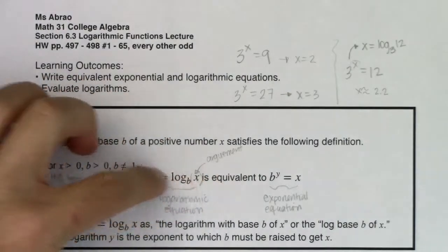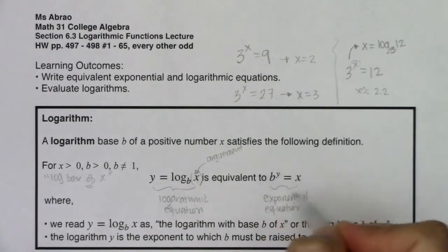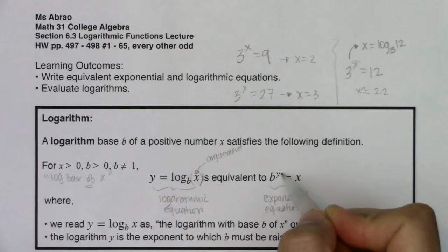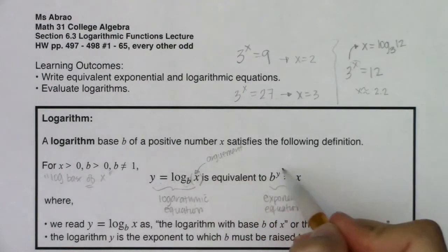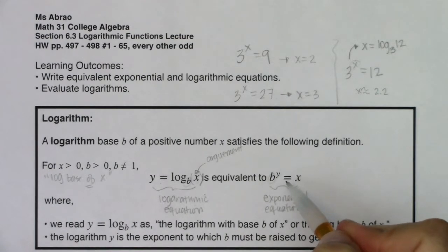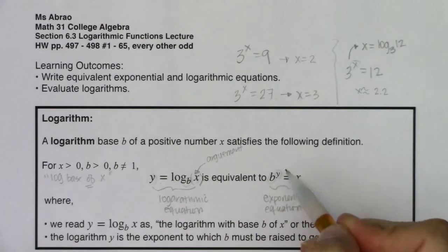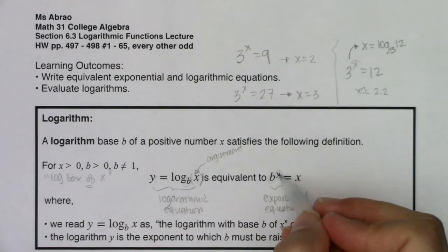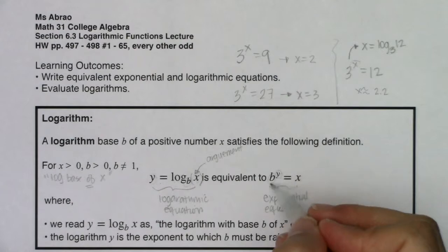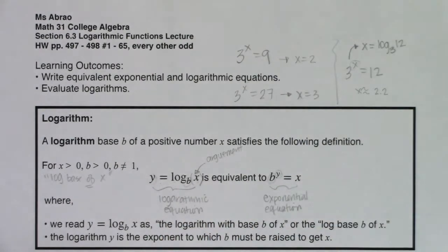So if you ever see a logarithmic equation like log base b of x equaling y, it has an equivalent exponential equation b to the y equaling x. Take note that the base of your logarithm is the same as the base of your power. And notice that this logarithm equals y, and y becomes the exponent — so logarithms are exponents. Whatever your exponent is in your power, that's what your logarithm is equal to, and the argument goes on the other side of the equal sign.